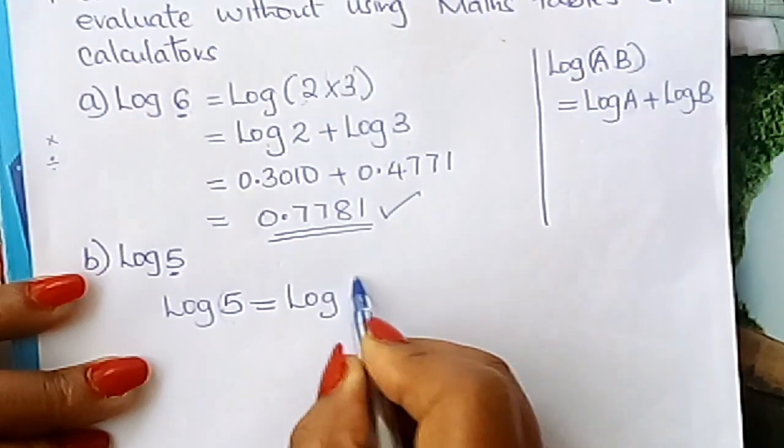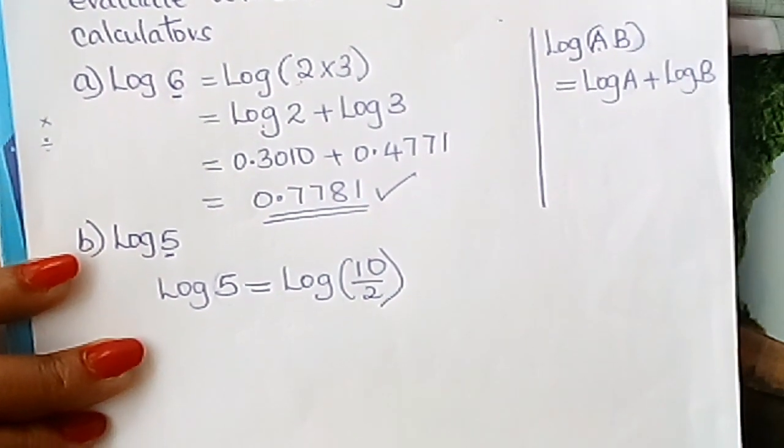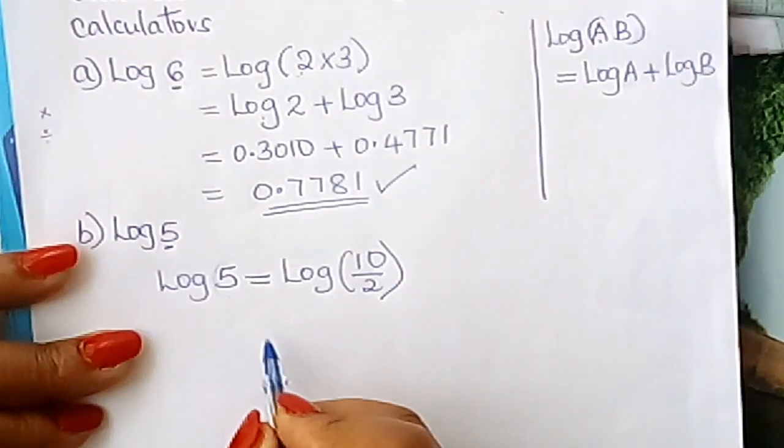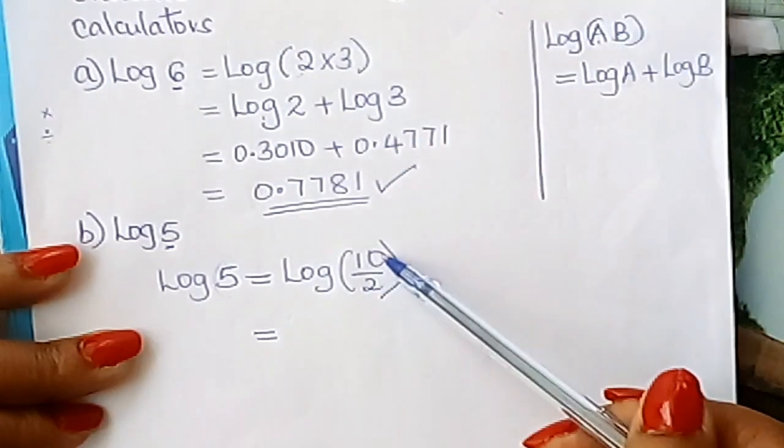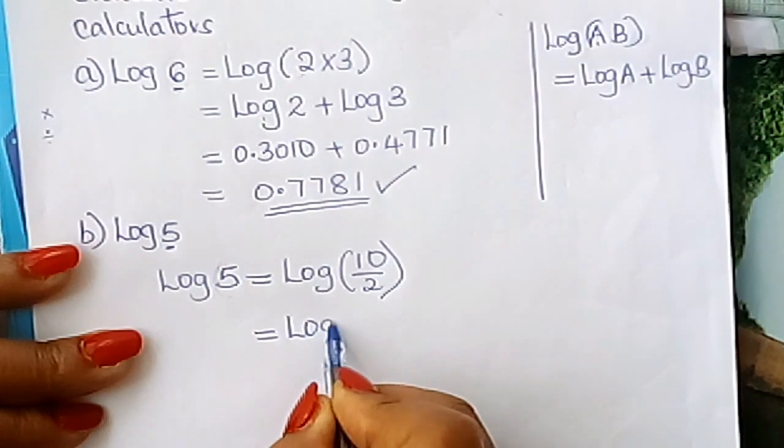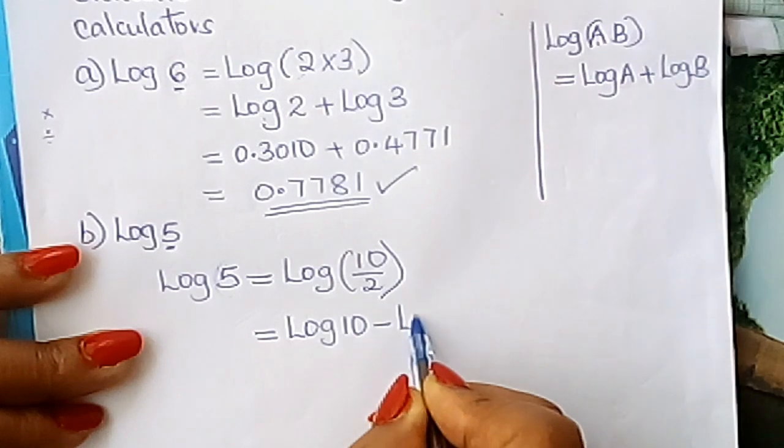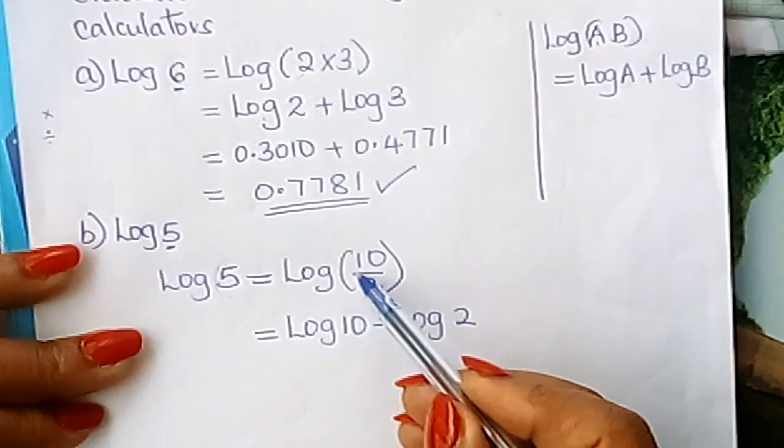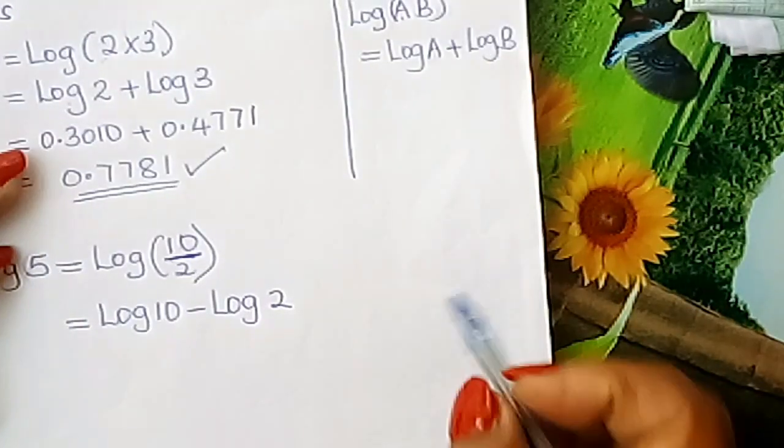This is equals to log 10 over 2 learner. Log 10 over 2, which can then be written as, even if 10 is not even here, I will explain why I fixed it there. Which is then written as log 10 minus log 2 because this is division here according to the other law.